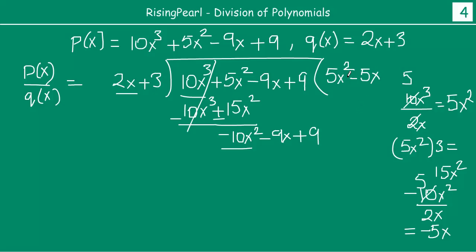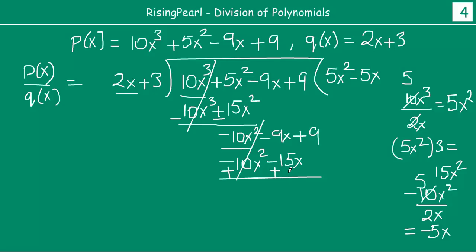Now you have the minus 5x term, you have to multiply this with both terms of the divisor. So minus 5x times 2x gives minus 10x squared. Now minus 5x times 3 is minus 15x. We have a subtract step, so the sign will change. So minus 10x squared cancels out. Then 15x minus 9x gives us 6x plus 9.